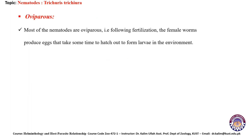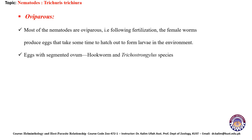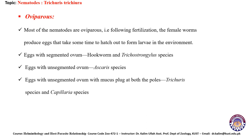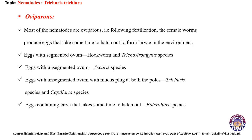Oviparous: most nematodes are oviparous. Following fertilization, female worms produce eggs that take some time to hatch into larvae in the environment. Examples include eggs with a segmented ovum, such as hookworm and Trichostrongylus species; eggs with an unsegmented ovum, like Ascaris species; eggs with an unsegmented ovum and a mucus plug at both poles, present in Trichuris and Capillaria species; and eggs containing larvae that take some time to hatch, as in Enterobius species.